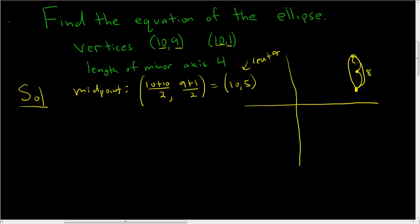And we know that this distance here is half of 8, so half of 8 is 4, so a is 4. We're also told that the length of the minor axis is 4, so half of that is b, so b is 2. So let's write down the formula.